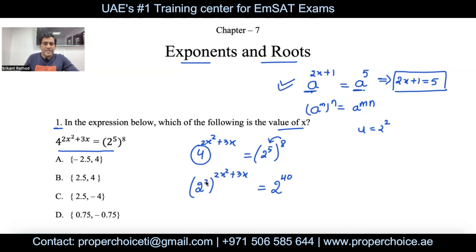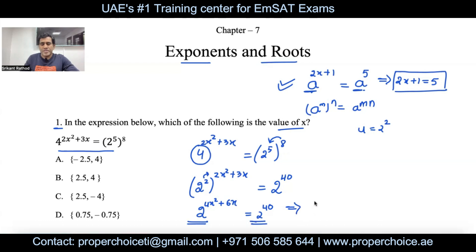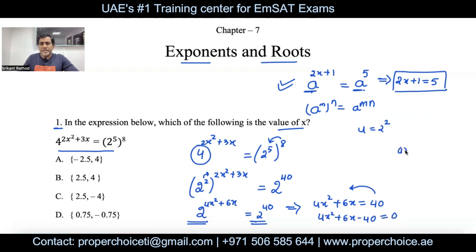Now simplify by multiplying the outer power 2 through the exponent: 2 × 2x² = 4x² and 2 × 3x = 6x. So the equation becomes 2 to the power (4x² + 6x) equals 2 to the power 40. Since the bases are the same, equate the powers: 4x² + 6x = 40, which rearranges to 4x² + 6x − 40 = 0, a quadratic of the form ax² + bx + c = 0.